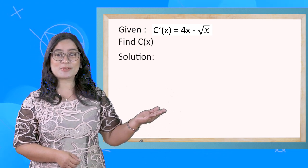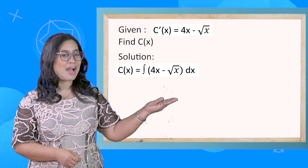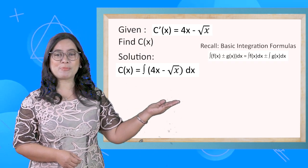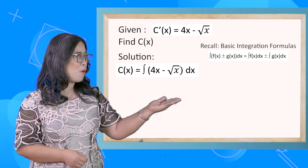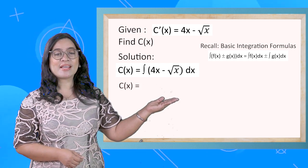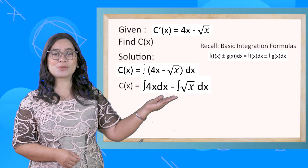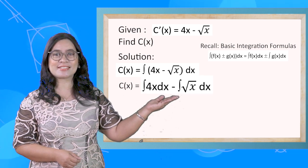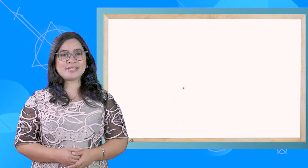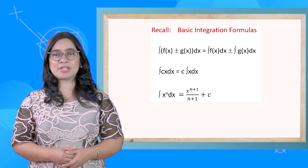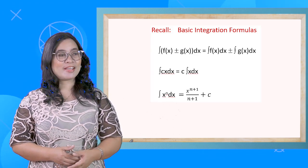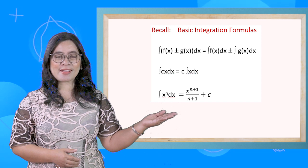Write C(x) this way and apply the integral of the sum or difference of two or more functions. So, C(x) becomes the integral of 4x dx minus the integral of √x dx. To integrate it, recall the integral of the product of a constant in a function, and also the power formula.